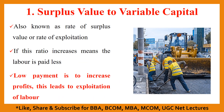The first ratio is surplus value to variable capital. If this ratio increases, it means that the laborers are paid less. The reason for this low payment is to increase profits — the capitalists exploit the labor. That is why this ratio is also known as the rate of surplus value or the rate of exploitation.